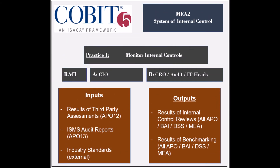The process has eight practices, and the first practice is to monitor internal controls. The entities responsible for this practice include the chief risk officer, the audit function, and several IT heads and managers.